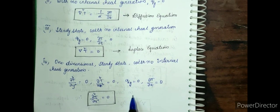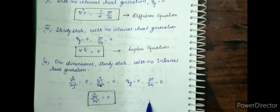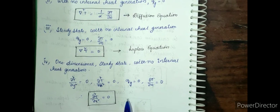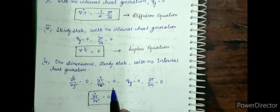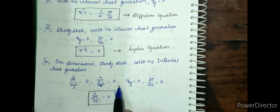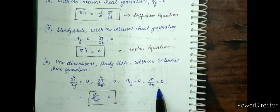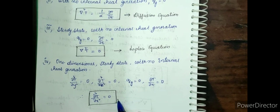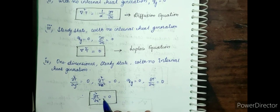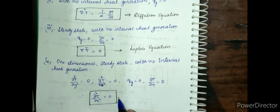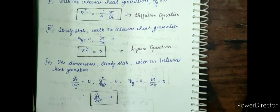The last case is one-dimensional steady state with no internal heat generation. Here ∂²T/∂y² = 0, ∂²T/∂z² = 0, qg = 0, and ∂T/∂t = 0. Therefore the equation reduces to simply: ∂²T/∂x² = 0.